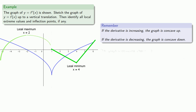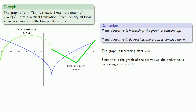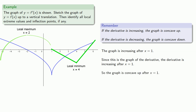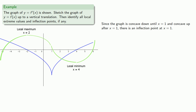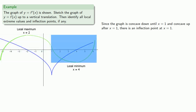Next, we see that the graph of f prime is increasing after x equals 1. Since this is the graph of the derivative, the derivative is increasing after x equals 1, so the graph of f is concave up. We have to match the skeleton, so the graph might look something like this. Since the graph is concave down until x equals 1 and concave up after x equals 1, that tells us there's an inflection point at x equals 1.